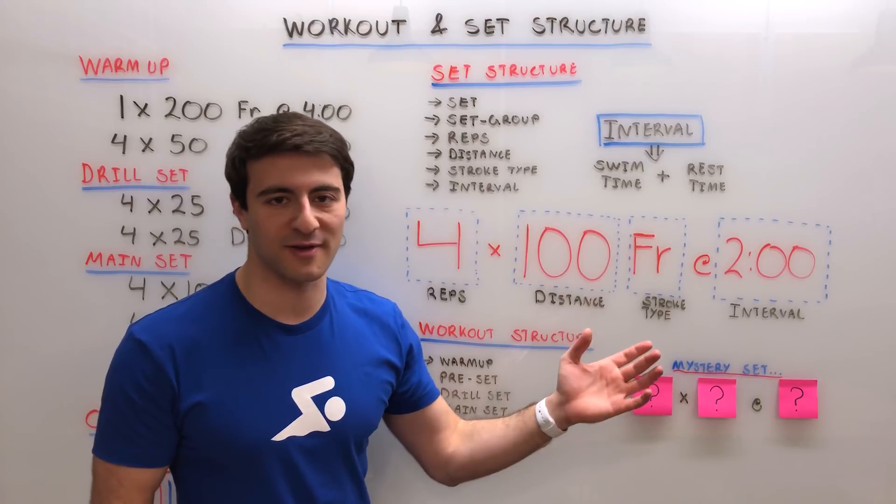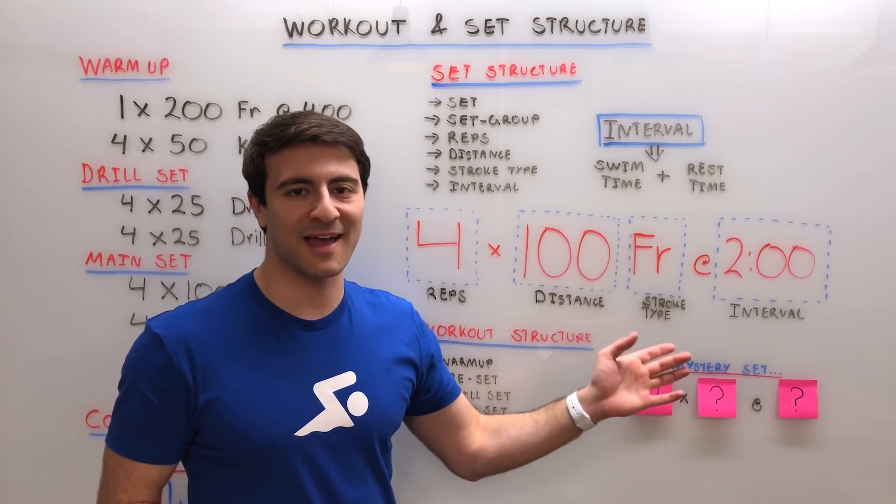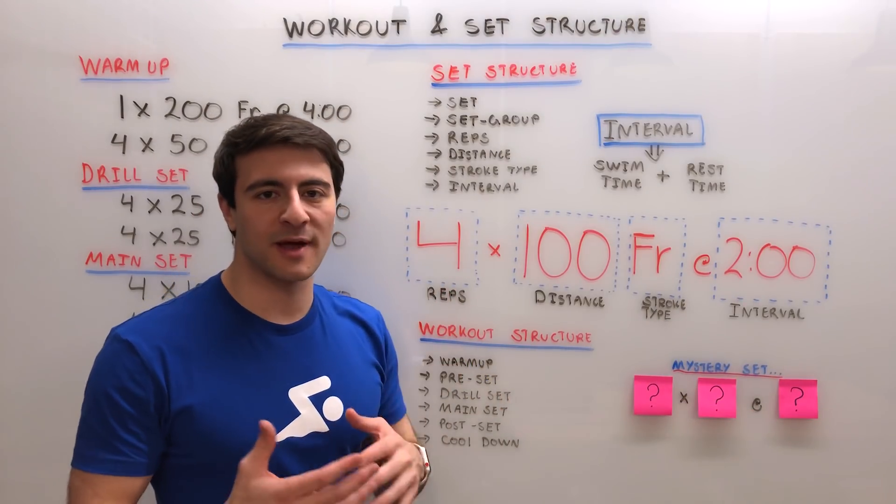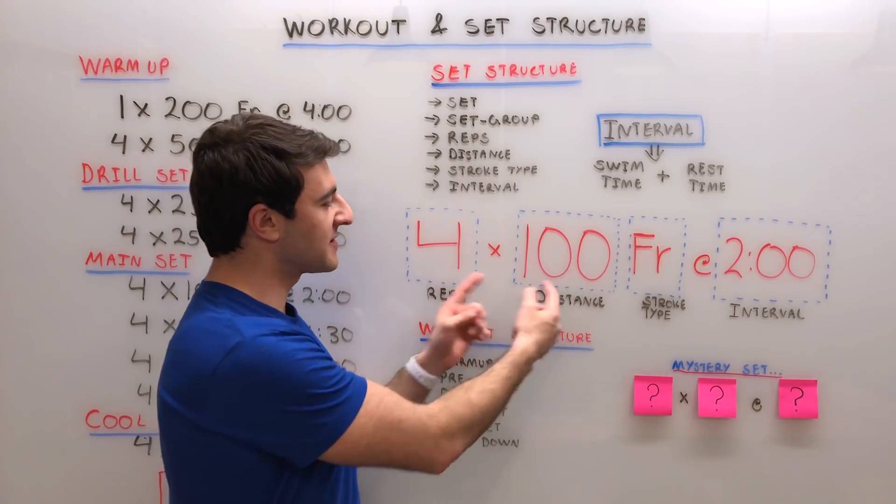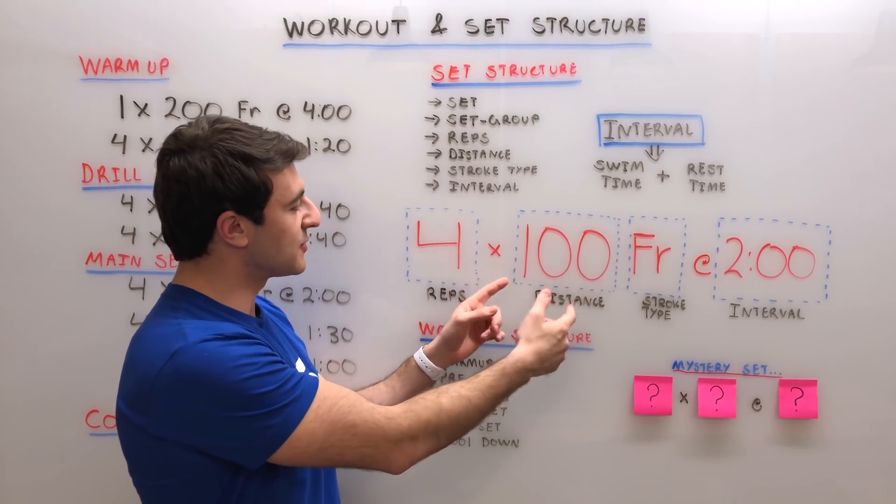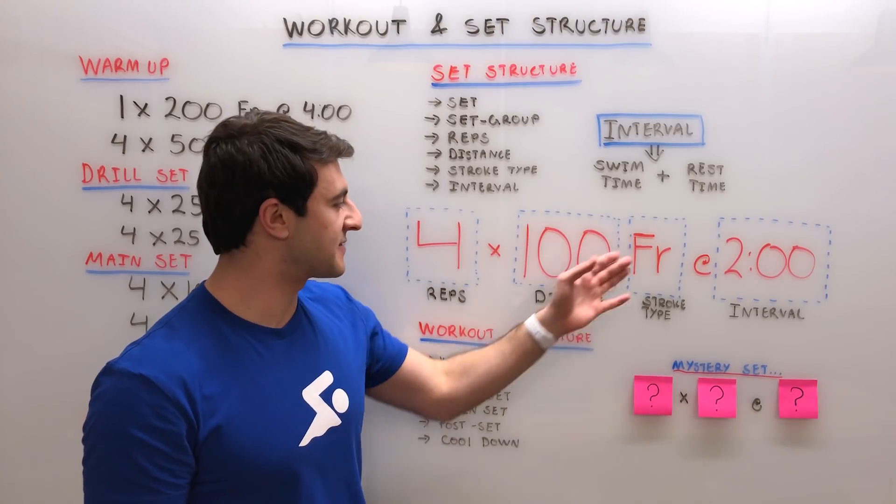So if we look at the example set that we have right now: four times 100 freestyle at two minutes. Four represents the number of repetitions. For whatever distance is defined, which is 100 in this case, you're going to do four of those, and the stroke type that you're swimming is freestyle.